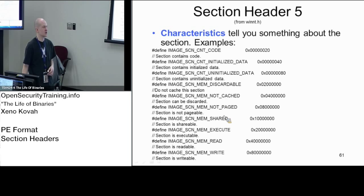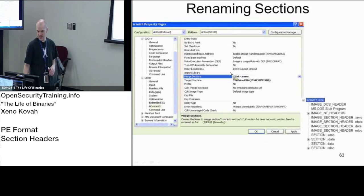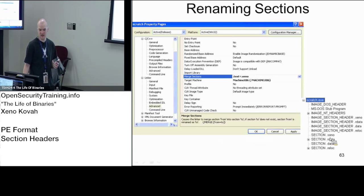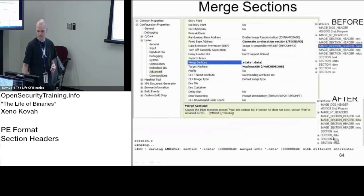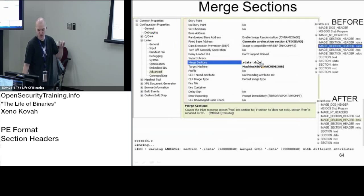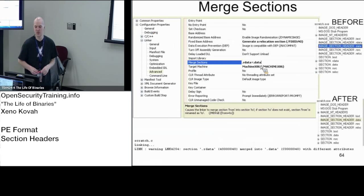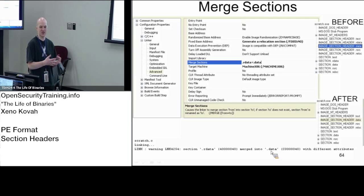I showed some examples in Visual Studio where, right from within the project settings, you can rename sections. For example, I can name .text as .text.xeno and it still runs fine. I can merge sections together — I can take the .rdata (read-only data) and merge it with the .data section (read-write data), and now I've got strings that can be manipulated. The compiler or linker will at least warn you and say: you're trying to merge two sections that don't have the same permissions, are you sure? And I said yes.